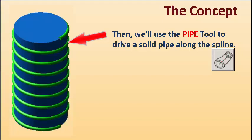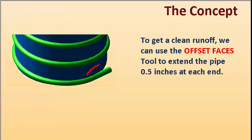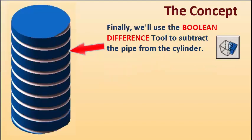Then we'll use the pipe tool to drive a solid pipe along the spline. To get a clean runoff, we can use the offset faces tool to extend the pipe 0.5 inches at each end. Finally, we'll use the boolean difference tool to subtract the pipe from the cylinder.